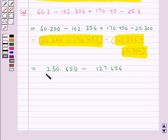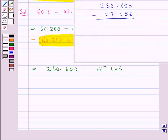Now when we subtract these two decimal numbers, that is 230.650 minus 127.656, we get: 10 minus 6 is 4, then 14 minus 5 is 9, then 15 minus 6 is 9.